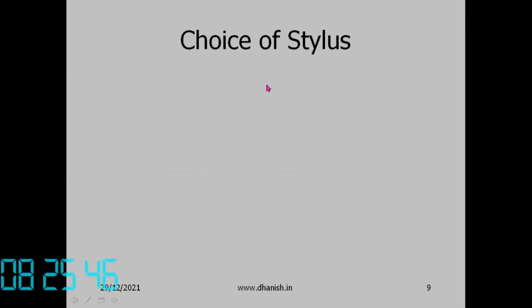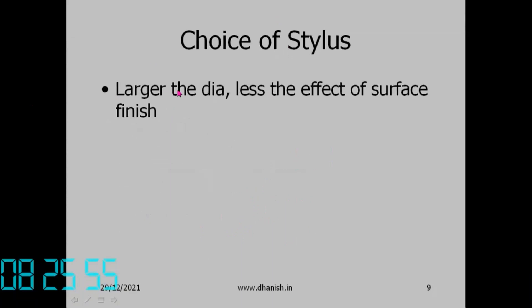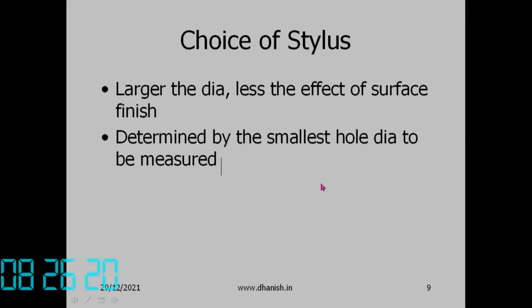For stylus choice, stylus diameter and extension length must be selected. A larger diameter reduces the effect of surface finish — it filters out roughness. However, the stylus must be smaller than the smallest hole to be measured. We should avoid changing the stylus as much as possible, since each change increases uncertainty.